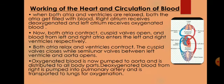The cuspid valves between the auricles and the ventricles are shut down, and the semilunar valves between the left ventricle and the aorta open up. The oxygenated blood is now pumped to the aorta and is distributed to all parts of the body, whereas the deoxygenated blood from the right ventricle is pumped into the pulmonary artery.